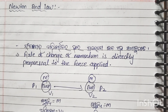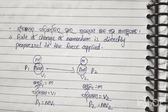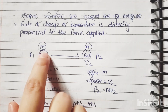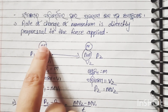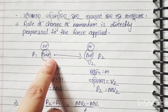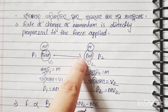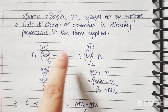Newton's Second Law: the rate of change of momentum is directly proportional to the force applied. Suppose there is a ball with a certain mass — if you kick the ball, the speed and velocity of the ball will change.